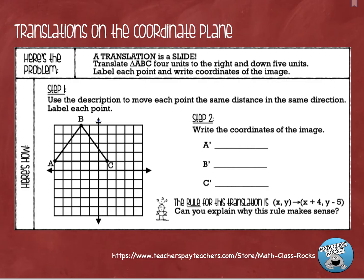Here's the problem. I'm going to translate triangle ABC four units to the right and down five units, label each point, and then write the coordinates of the image. First of all, let's keep in mind that a translation is a slide — that's when you take a figure and just move it around on the graph. It doesn't change the size, shape, or turn it in any way. All it does is move it to a different location.